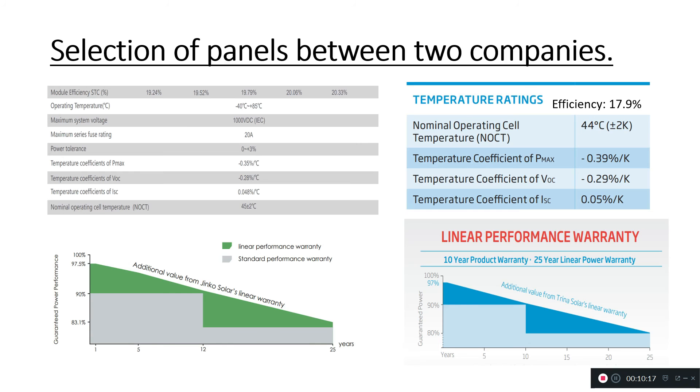The next major factor is the temperature coefficient of power. For every rise in temperature there will be 0.35 percent decrease in power, whereas here it is 0.39 percent. Here it is not mentioned in Celsius, it is mentioned in Kelvin - you can check it by converting it into Celsius. These are the major things which you need to consider - module efficiency and the temperature coefficient of power.